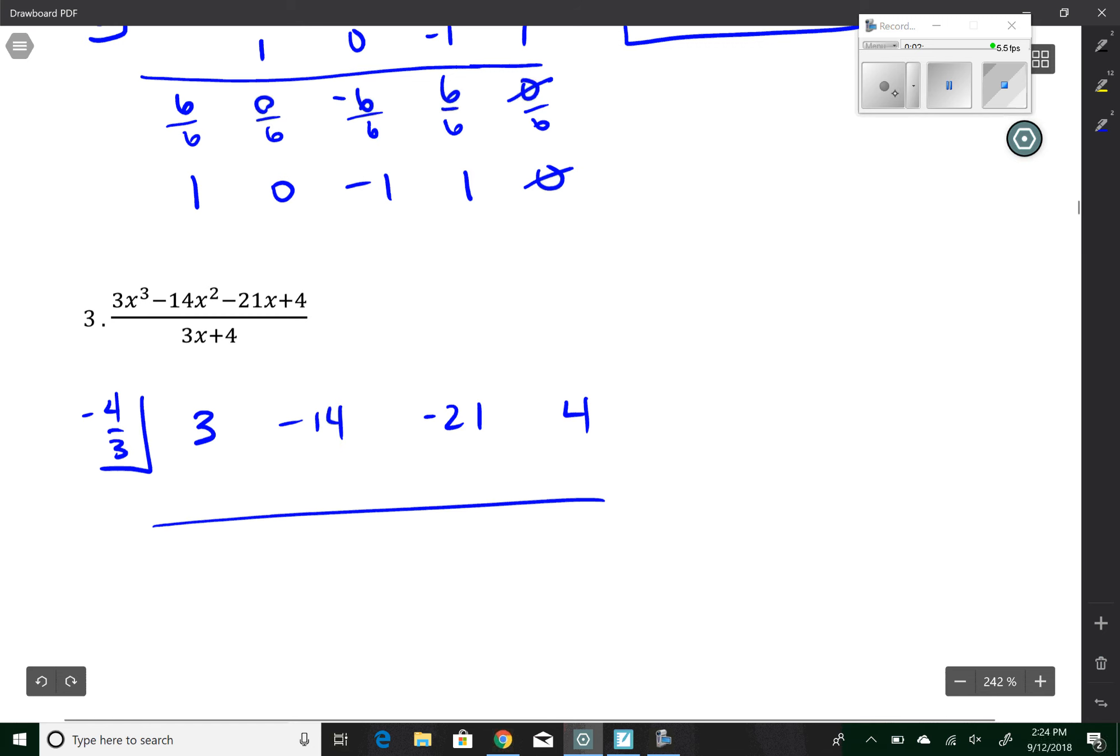So if we multiply negative 4 thirds times 3, that gives me negative 4, which gives me negative 18 when I add. If I do that, I wind up getting negative 4 thirds times negative 18. Double negative is a positive. So that's going to become a positive 24. That becomes 3. 3 times negative 4 thirds is negative 4, which gives me 0.